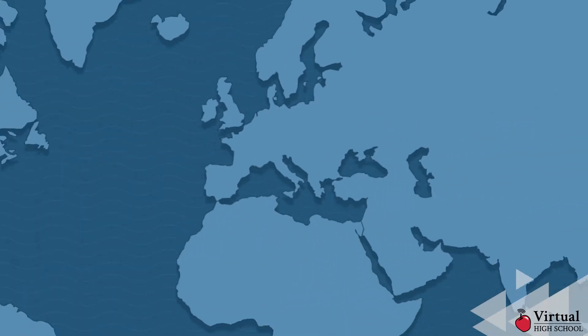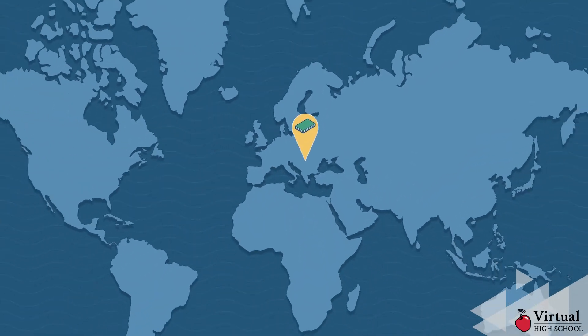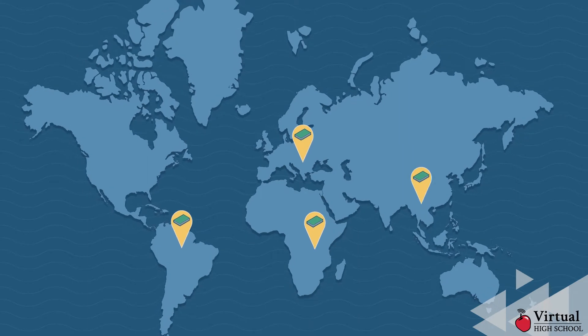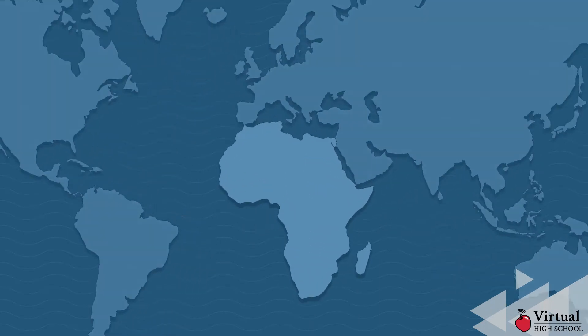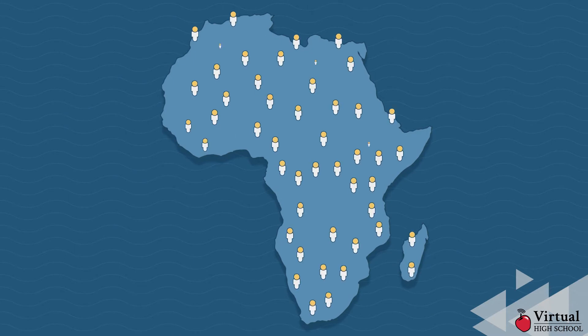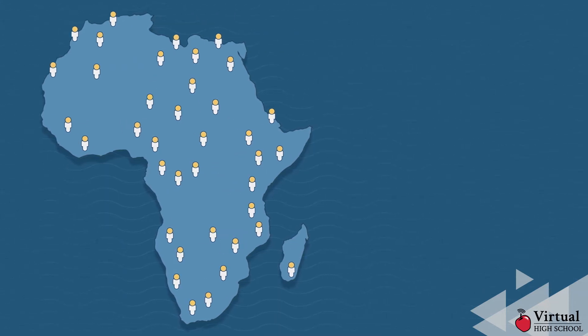The inability to read or write is a global issue that impacts several communities across the globe. For example, there are 1.3 billion people who live on the African continent. Yet, only 62% of African adults are literate.